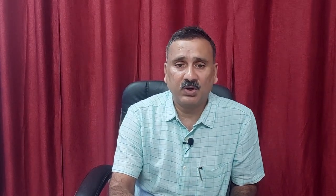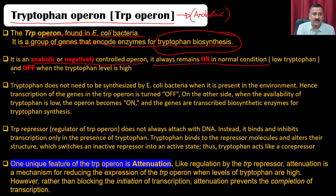Remember that the first operon we discussed is for the breakdown of lactose — it breaks down lactose into glucose and galactose, deriving energy from the lactose molecule. Here, however, you are actually consuming energy, so this is an anabolic pathway. It is a negatively controlled operon: it always remains on under normal conditions and turns off when the tryptophan level is high — exactly the reverse of the lac operon.